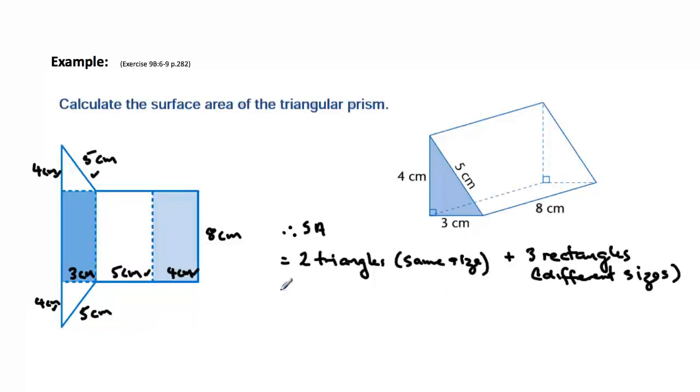So let's work these out. Now we can say that the 2 triangles must be equal to 2 times one-half times base times height. So we've got 2 times one-half, now the base in this case would be 3cm, we'll use this as our base. And the perpendicular height then would be 4cm, 3 by 4.